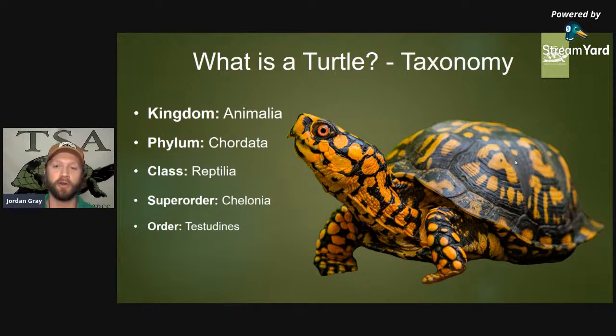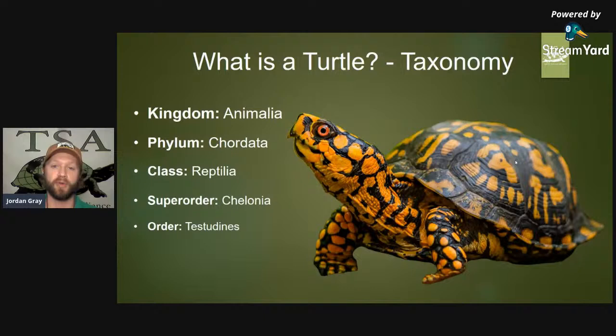Turtles, tortoises, terrapins, and sea turtles are in the order Testudines — that is the collective group of all of them. Testudines are actually the most endangered group of vertebrates on earth at the taxonomic level of the order. That is something we'll get to in a following webinar — threats to turtles, their endangerment status, and what we can do to protect them.